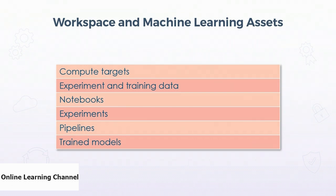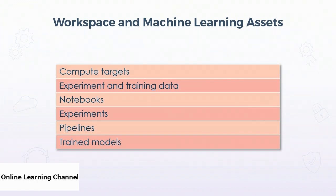Another asset is a dataset. Datasets are probably the single most important thing you'll need when embarking on your machine learning journey. That data can be used for training models, but it can also be used to run experiments and test models. Another common asset is notebooks — notebooks allow you to create code snippets, create narrative text, and visualize data. It's a very good tool for training models in an educational way.